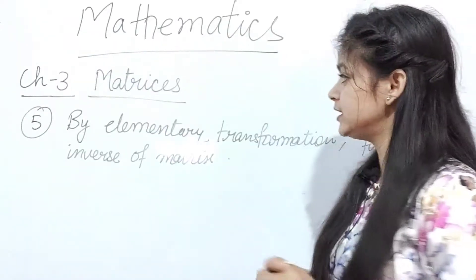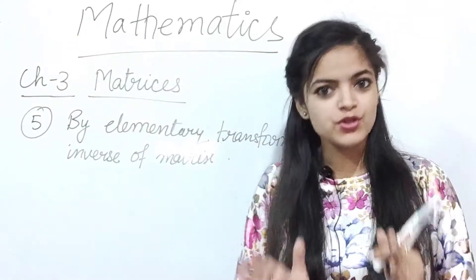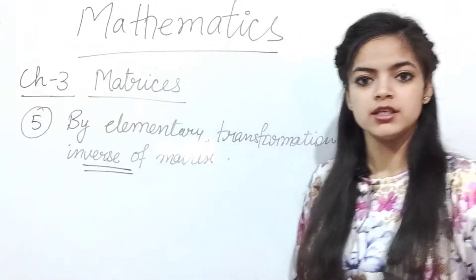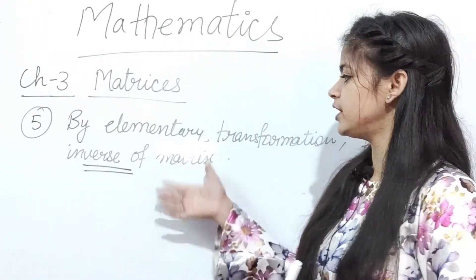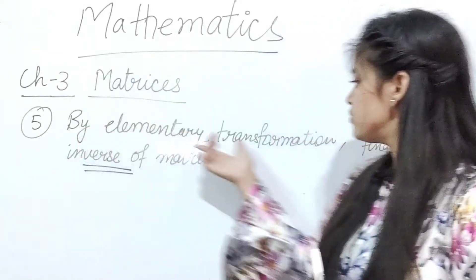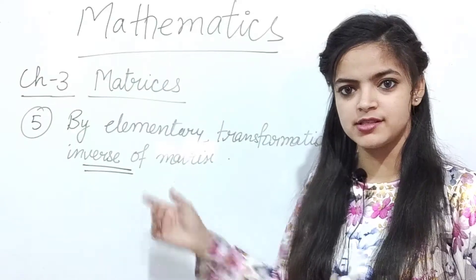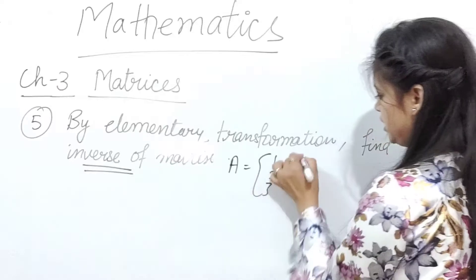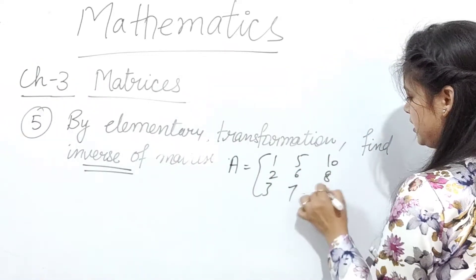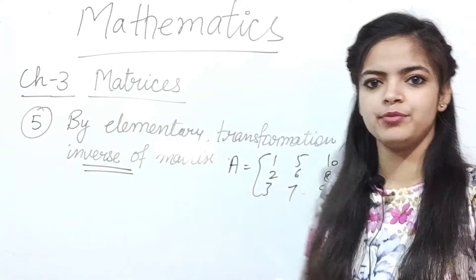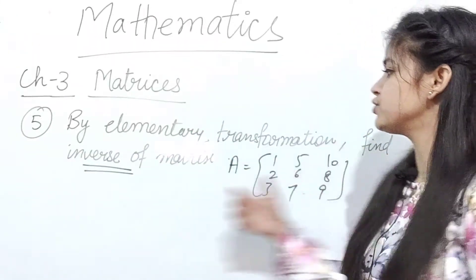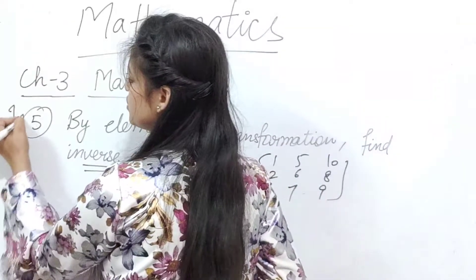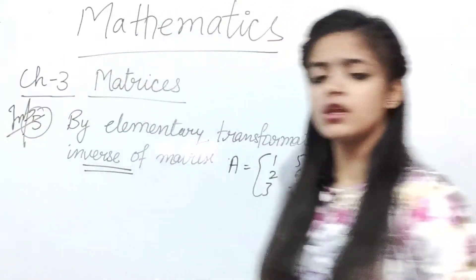You should know all the formulas. Now move on to our next most important chapter — Matrices, chapter number 3. The most important question in matrices is the inverse of a matrix. There is full certainty that this question always comes for 6 marks: by elementary transformation, find the inverse of a matrix. A matrix like A = [[1,2,3],[5,6,7],[10,8,9]] will be given, and you have to find its inverse.